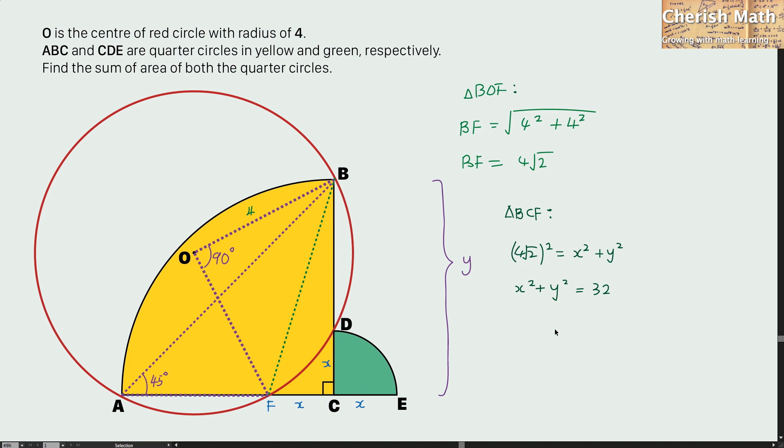For the sum of quarter circles area, I'm going to work out by using 1 quarter pi y square, which is the yellow quarter circle area, plus 1 quarter pi x square, which is the green quarter circle area. And that is going to give me 1 quarter pi in the bracket x square plus y square after factorization.